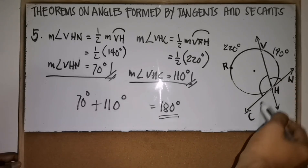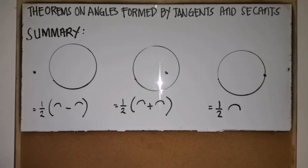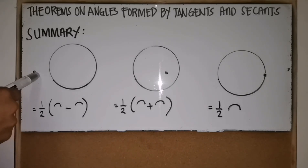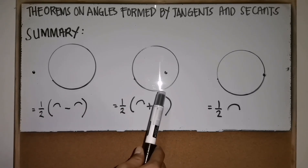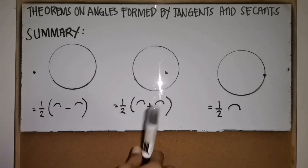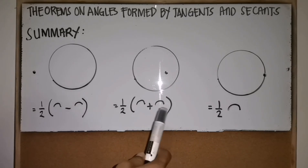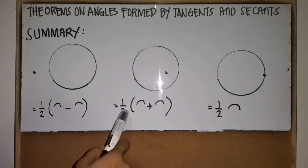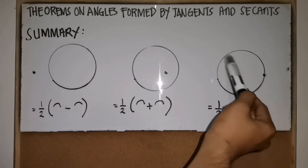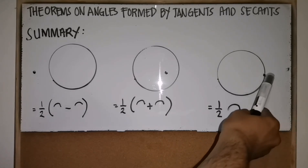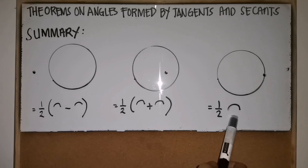To summarize the theorems on angles formed by tangents and secants: if the intersection of secant or tangent lines is outside the circle, the angle equals one half the difference of the two intercepted arcs. If the intersection of two secants is inside the circle, the angle equals one half the sum of the two intercepted arcs. If the intersection of a tangent and a secant is on the circle, the angle equals one half of its intercepted arc.